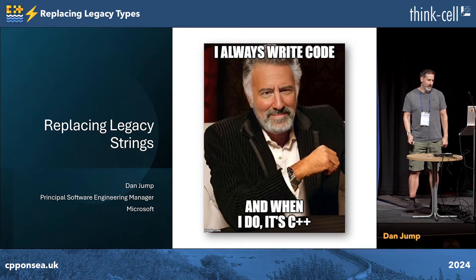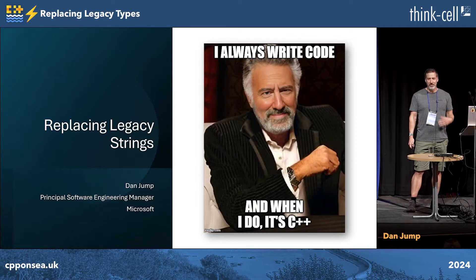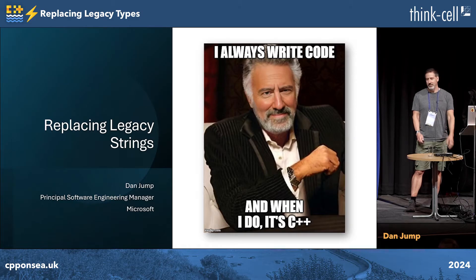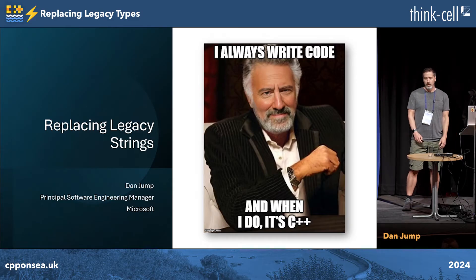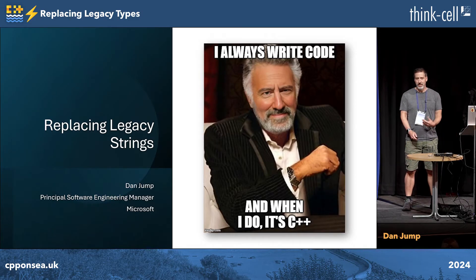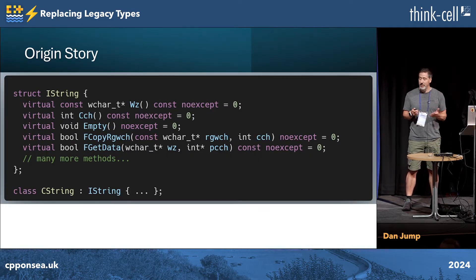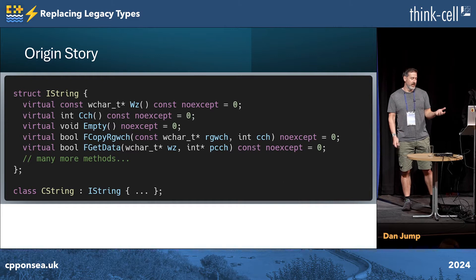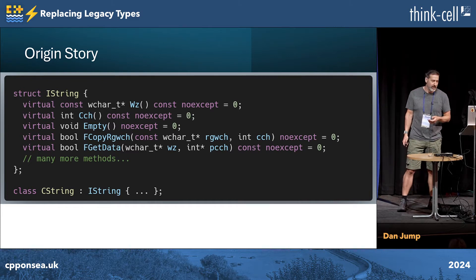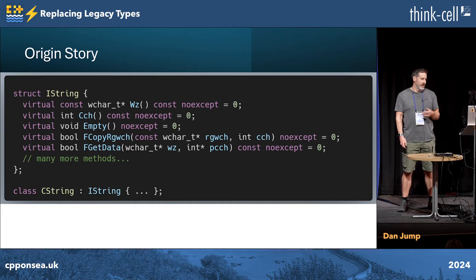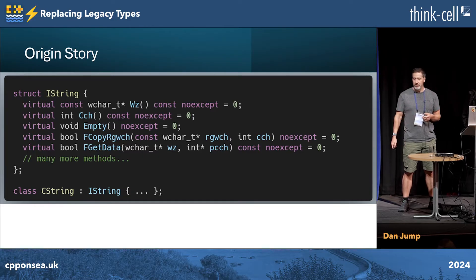The last 10 years or so, my team's been tasked with modernizing and refactoring some of our older code to make it easier to use and maintain. This is just going to talk about how we take this old string class — written who knows, 1990 maybe — and safely convert it across the codebase to std::wstring.